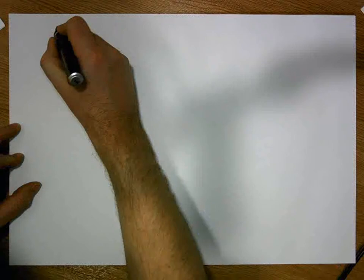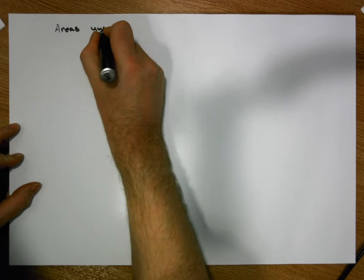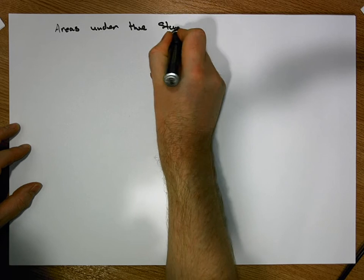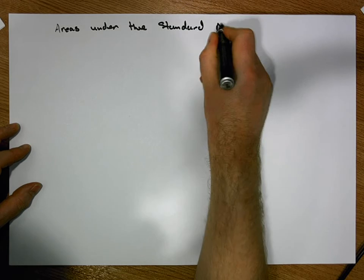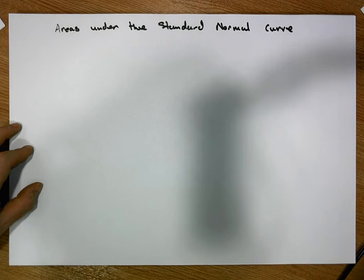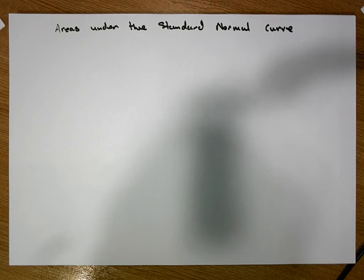We're going to call them type 1, type 2, type 3, all the way through to type 7 probabilities. This video is going to deal with areas under the standard normal distribution, under the standard normal curve, and as I said we'll have seven types of probabilities or seven types of areas that will be required to calculate.